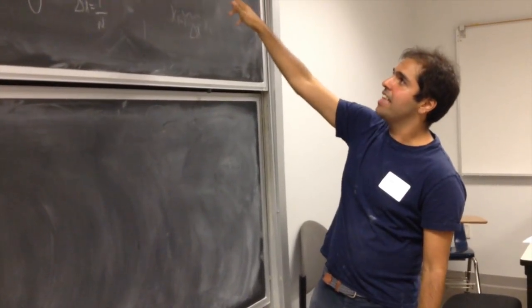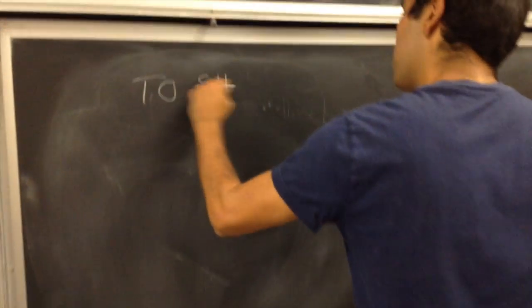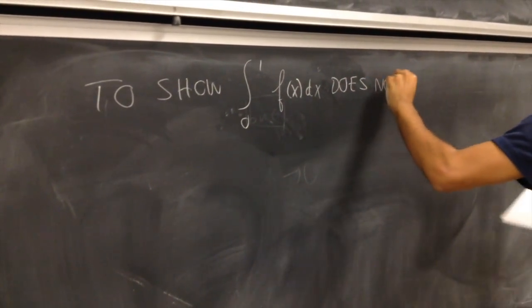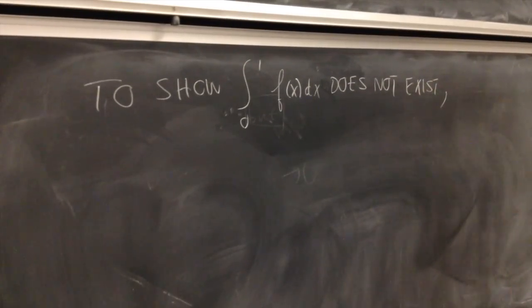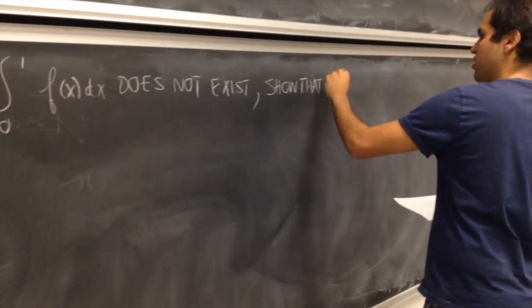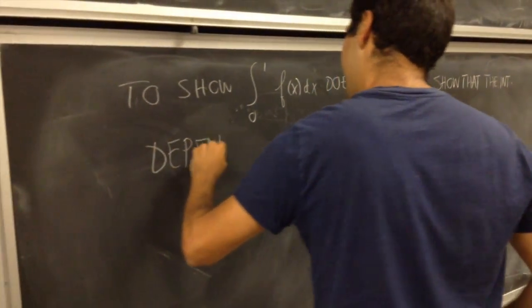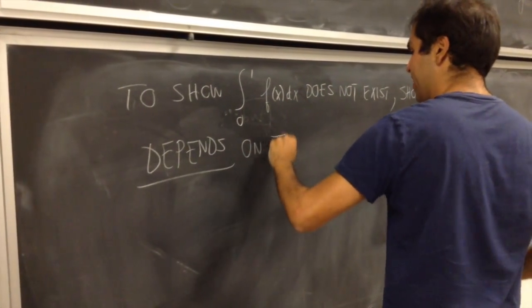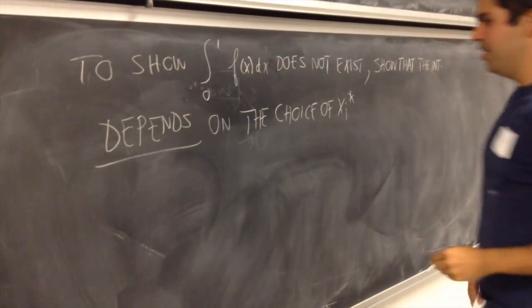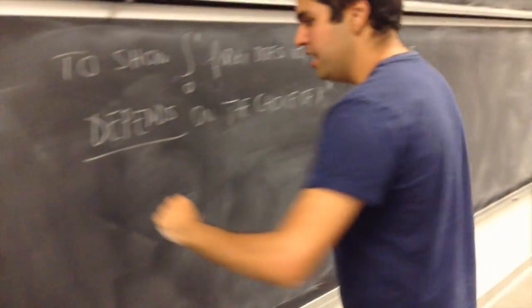So what I want to show is that this definition actually depends on xi star. So to show integral from 0 to 1, f of x dx does not exist, find, show that, as I said, show that the integral depends on the choice, on the choice of xi star, on xi star. And it's actually not very hard to show that it depends on it, because there are two cases, namely, case 1.